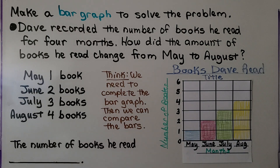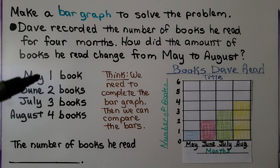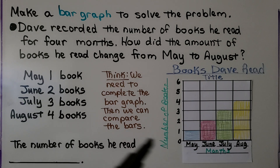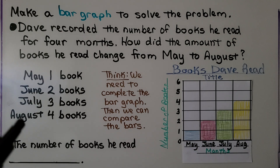Here it's telling us to make a bar graph to solve the problem. The problem reads: Dave recorded the number of books he read for 4 months. How did the amount of books he read change from May to August? We need to complete the bar graph, then we can compare the bars. I wrote names for the bars that matched the months: May, June, July, and August.